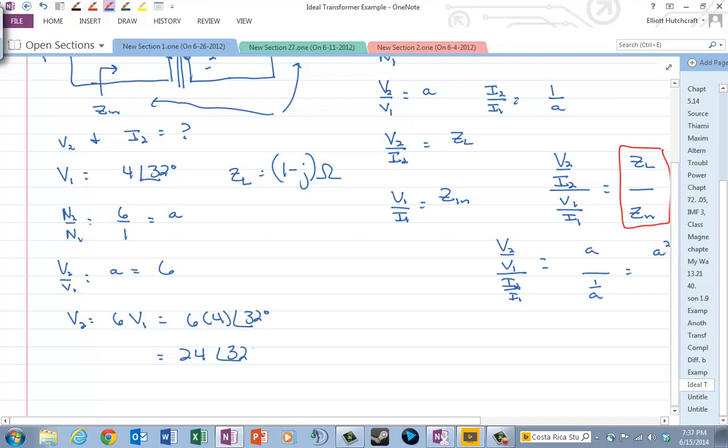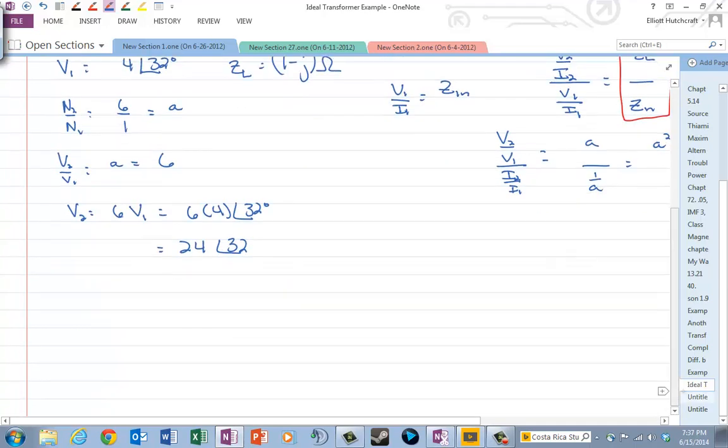And then we can say, well, we want I2. We didn't have I1, so we can't use, if we did have I1 right off the bat, we could say, well, I2 over I1 is 1 over A. That's fine, but we don't know I1. We just knew V1. Now of course, if we did move that load impedance to the input side as an input impedance, then we can find I1, and then find I2. But that's not the way I think it's easiest in this problem.